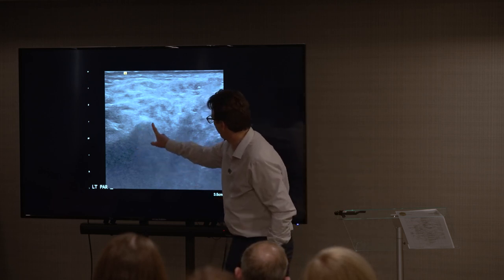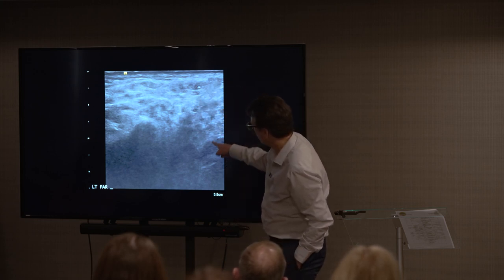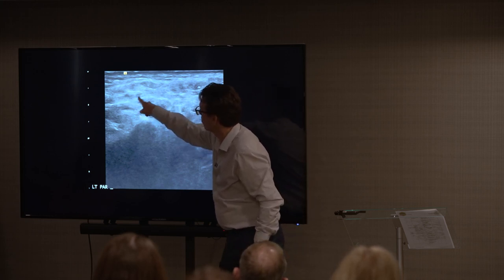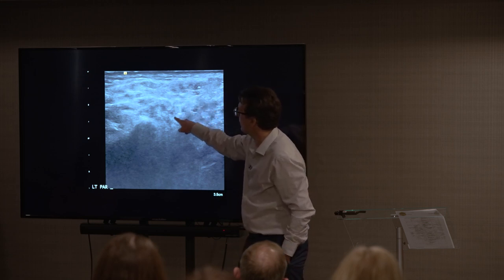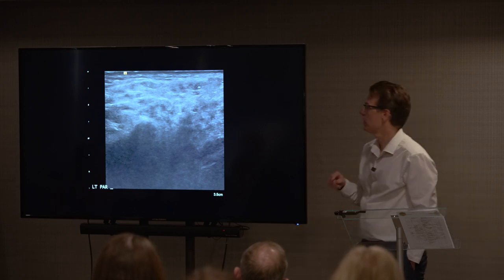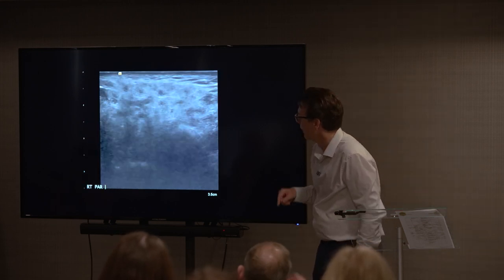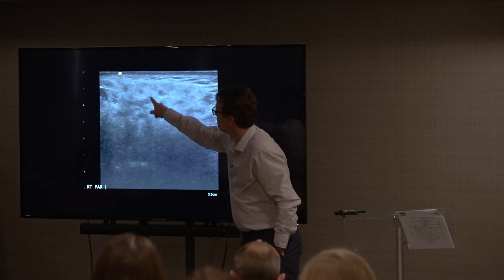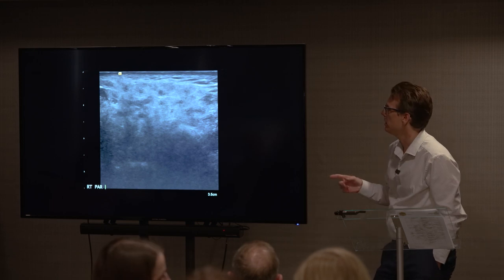To orientate you — the mandible is here, this is the parotid gland, and can you see all these little dark hypoechoic spots within it? This is what Sjögren's looks like on ultrasound. Again, similar on the next image — these dark spots in a patient with a confirmed Sjögren's diagnosis.